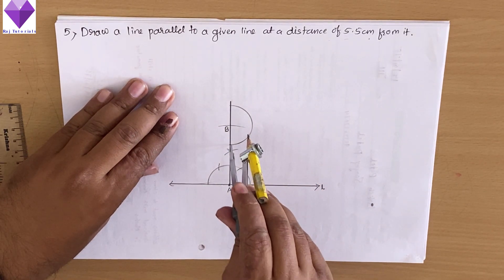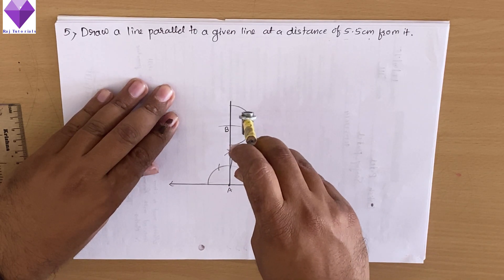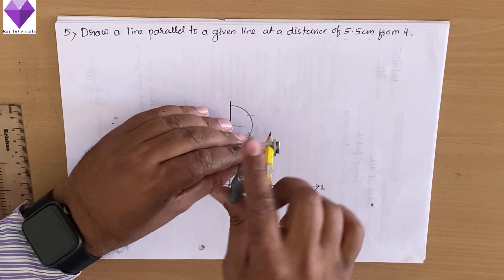And with this as center, again two arcs: first 60, then second will be 120. With 60 as center, I will draw a radius to cut this line at 90 degrees.